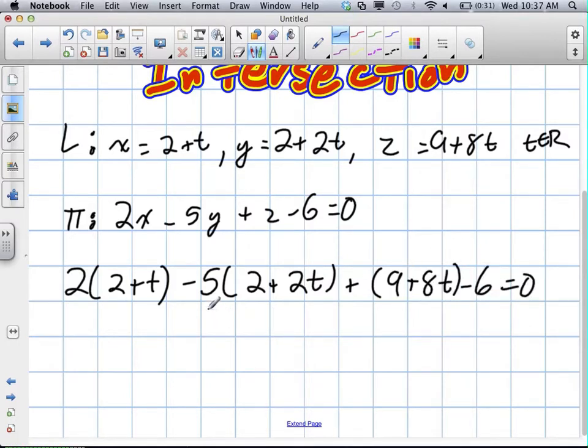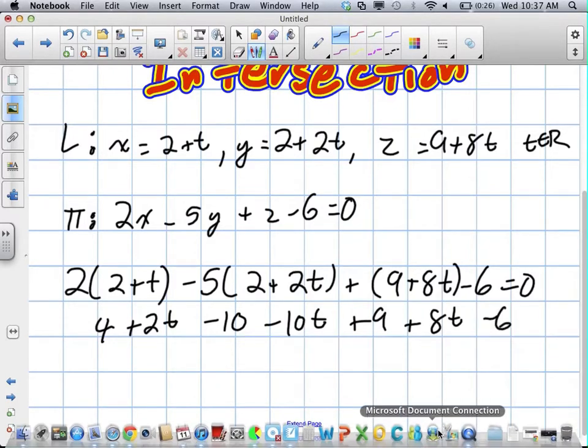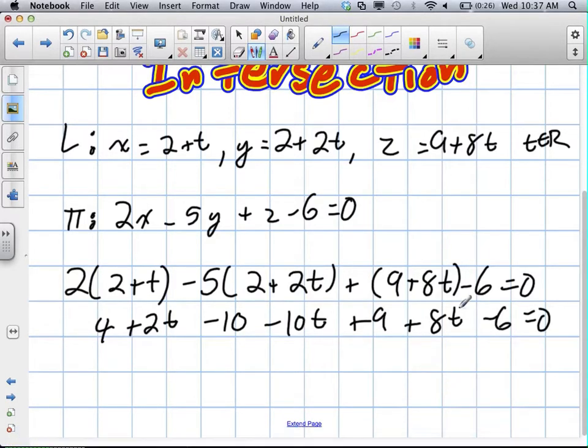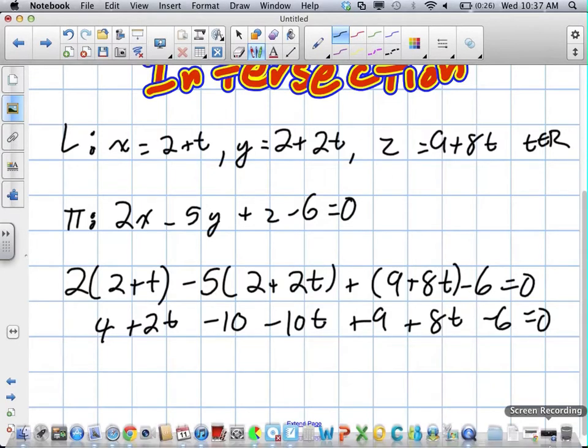We'll quickly jump through that. 4 plus 2t minus 10 minus 10t plus 9 plus 8t minus 6 equals 0. We'll collect our like terms here.